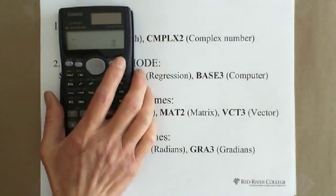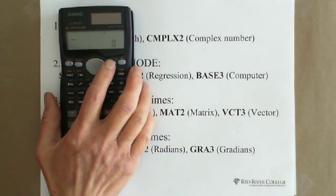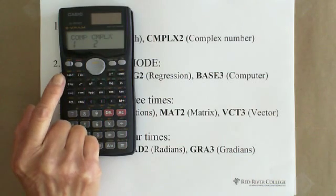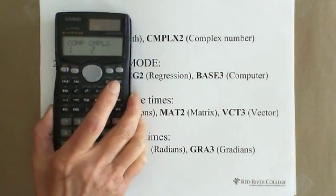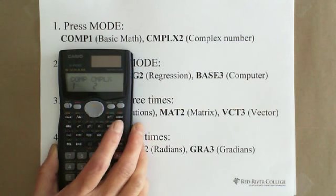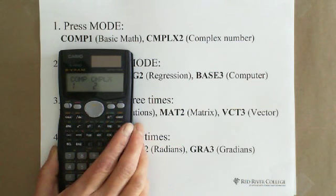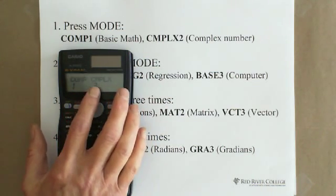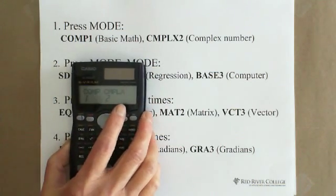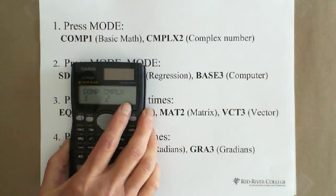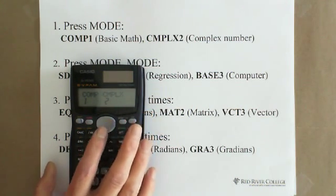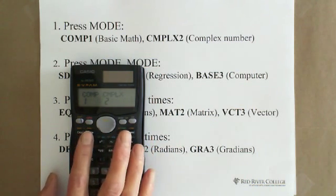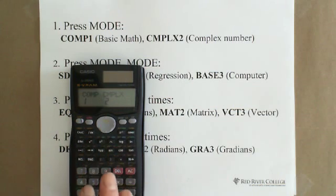When you press mode, you can see COMP1. This is basic math calculation. And CMPLX2 is complex, working with complex number calculation. So mostly if you're using calculator to do the basic math calculation, everything you need to press 1. This is related to everything else except the complex number.